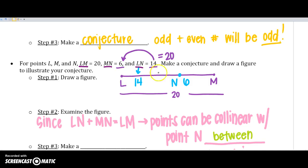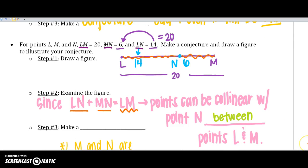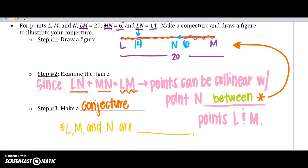Since LM, LN, plus MN, does equal 20, the points can be collinear with N between them. And I'm, again, this doesn't mean that that is the truest statement, and there's nothing else, but that's what I'm getting from the information. So, when I make my conjecture, a conjecture, an educated guess could say that L, M, and N are, they're probably collinear.